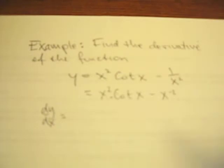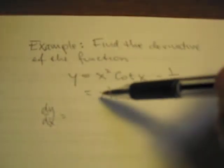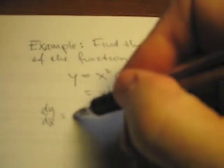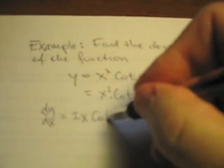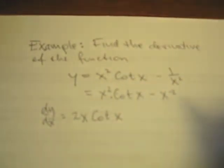So dy dx is going to be equal, we apply the product rule. The product rule says the derivative of the first function, which will be 2x, multiplied by the cotangent of x, which is the second function,